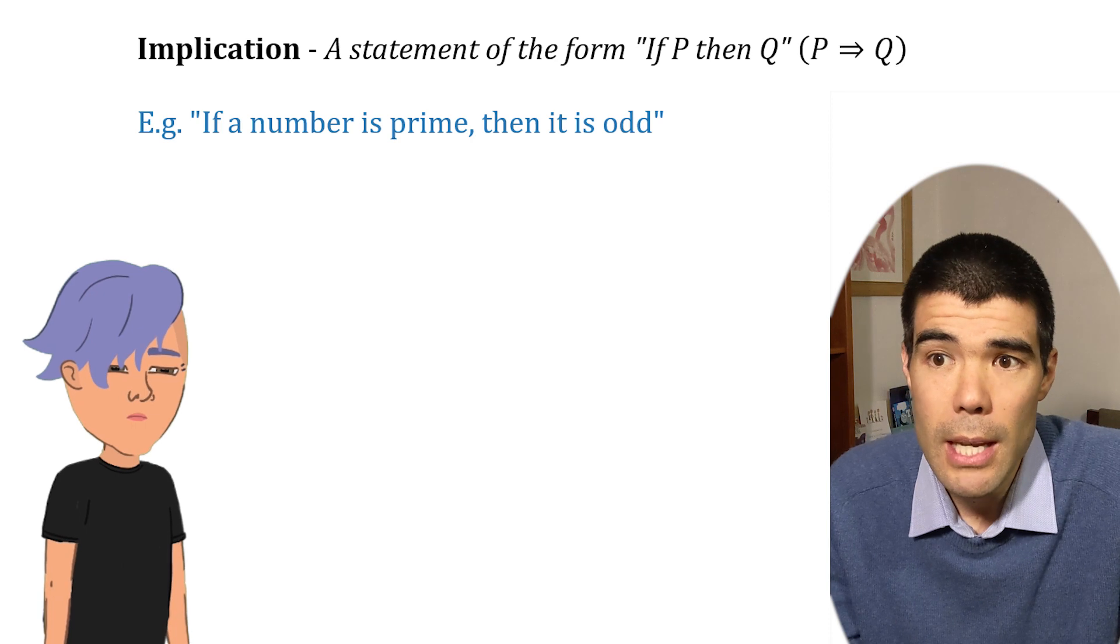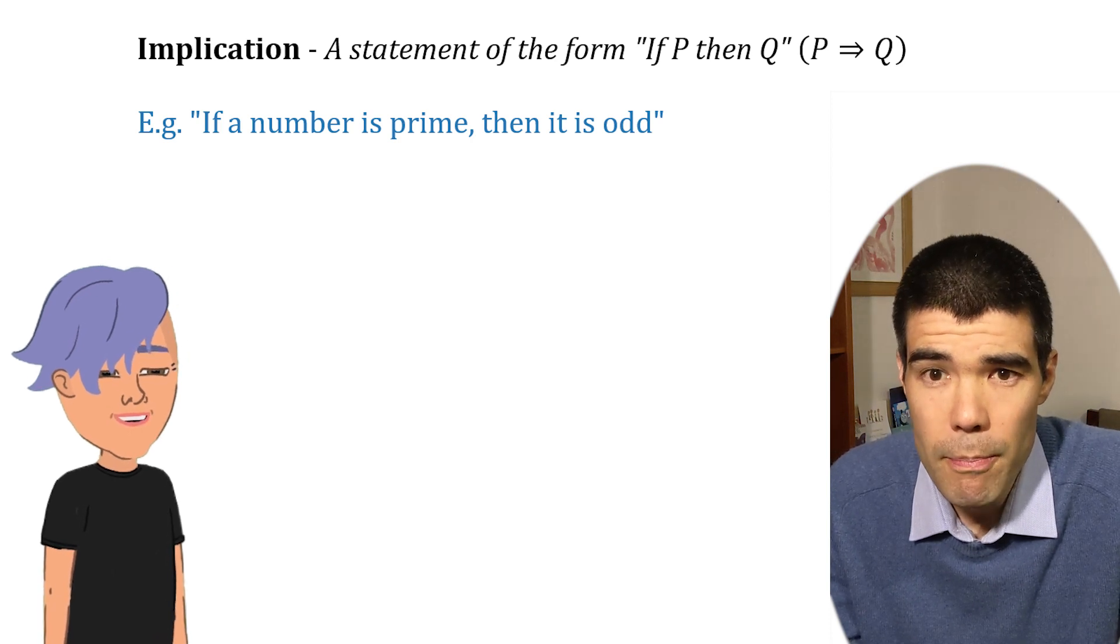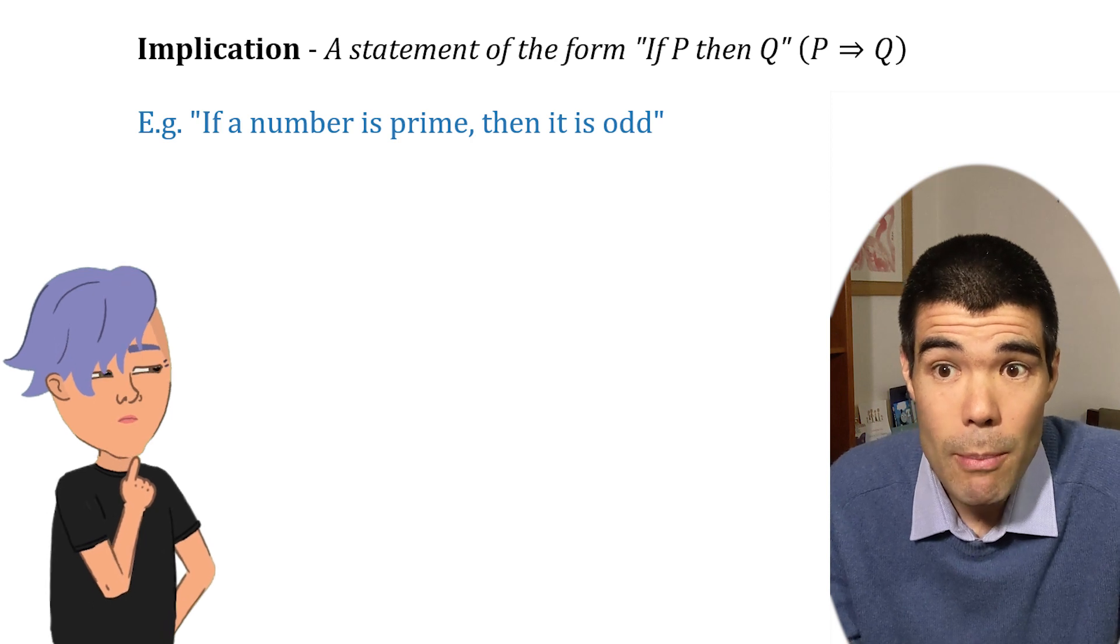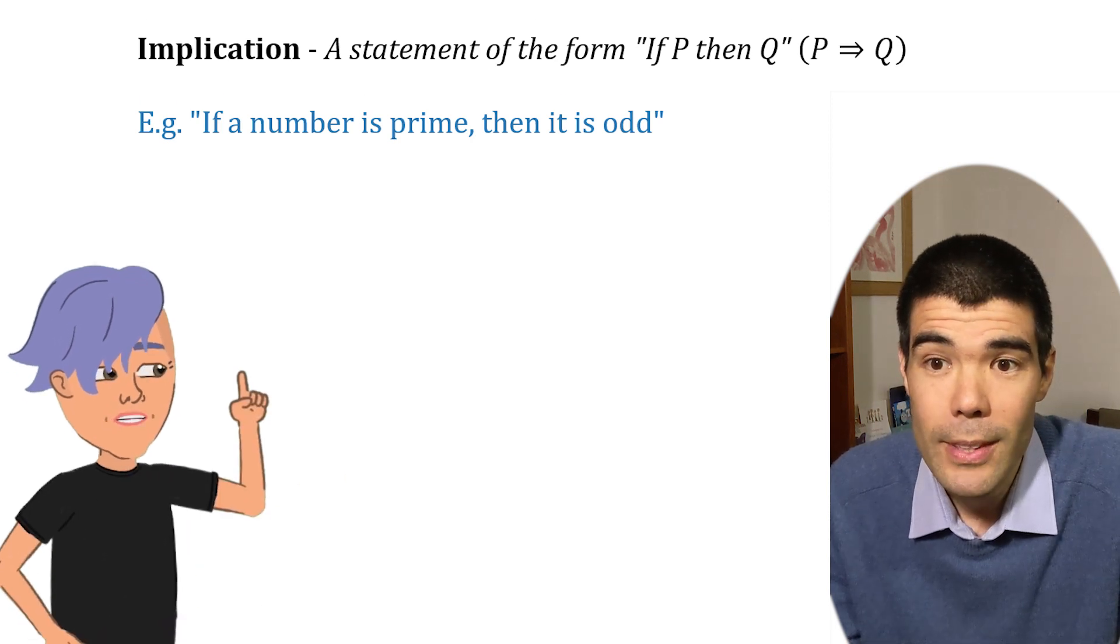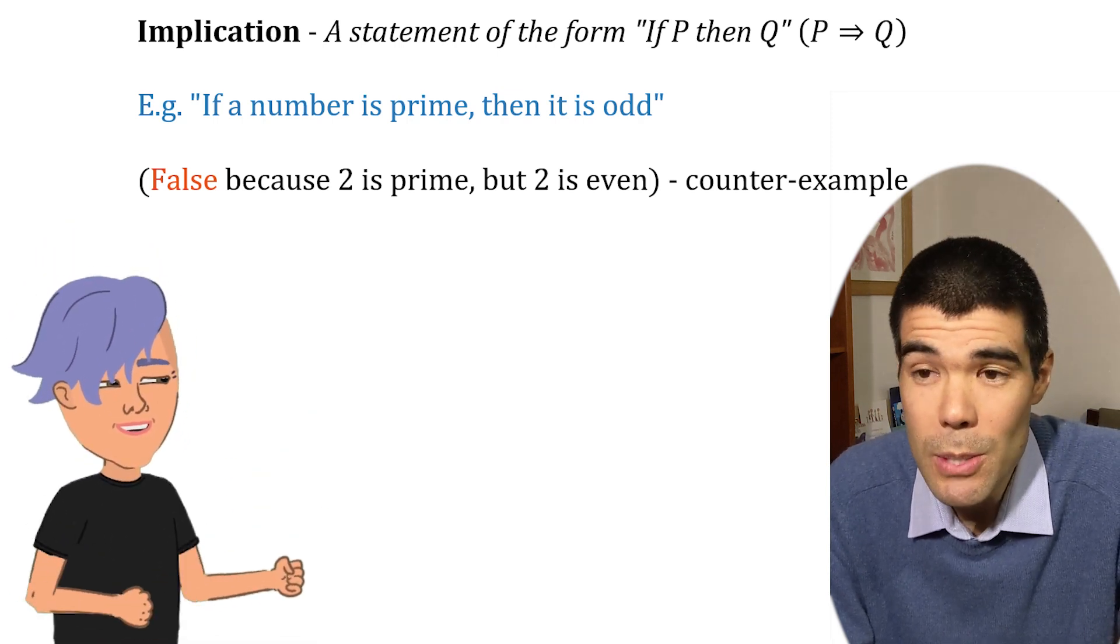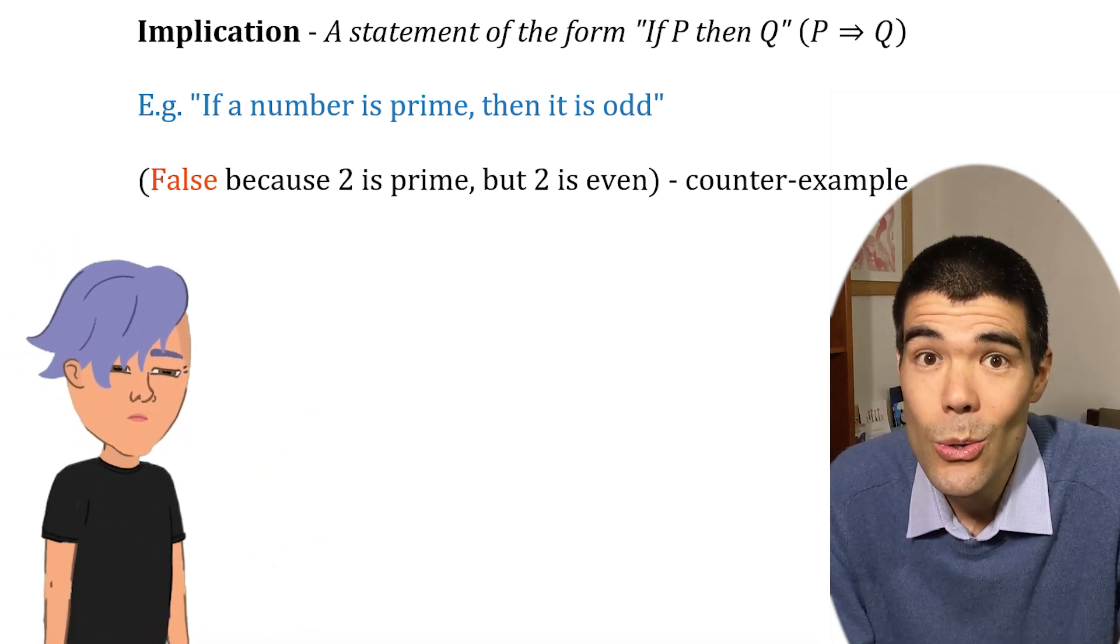So for example, the statement if a number is prime, then it's odd is true unless there's a prime number that is even, like the number 2. Exactly. The number 2 is prime and even, so it disproves the statement. That's called a counterexample.